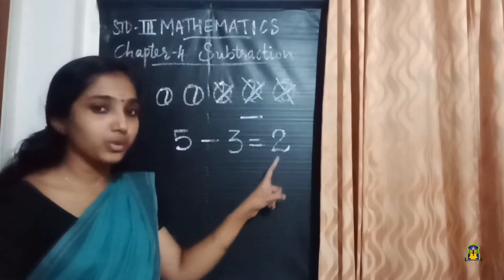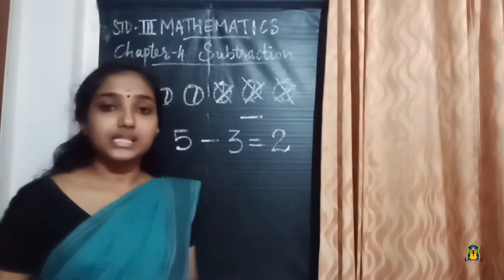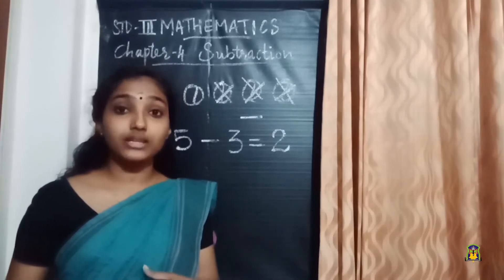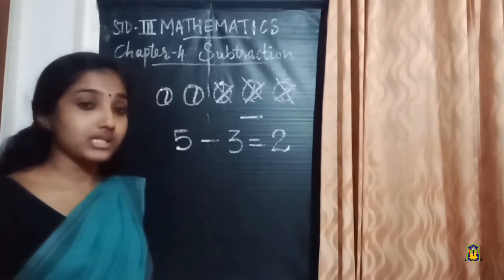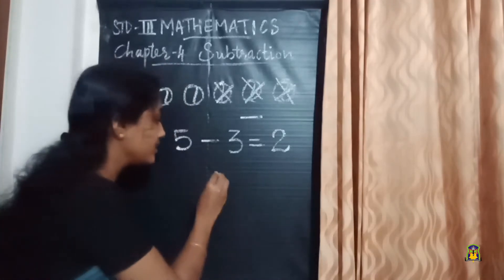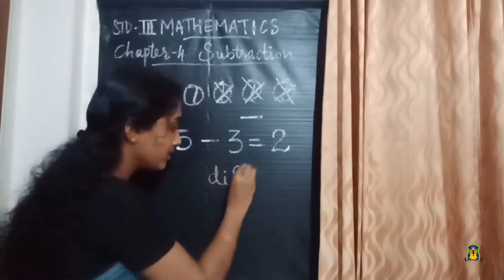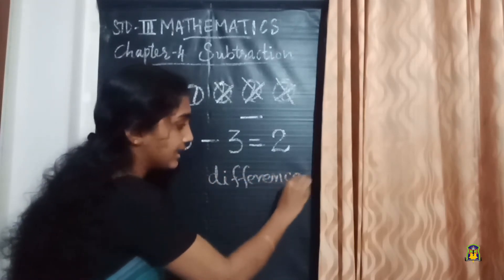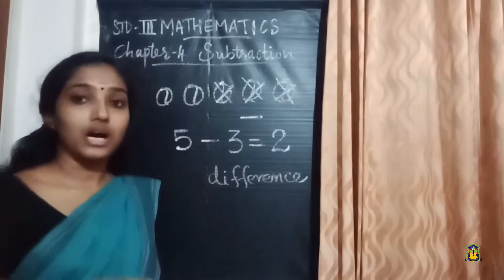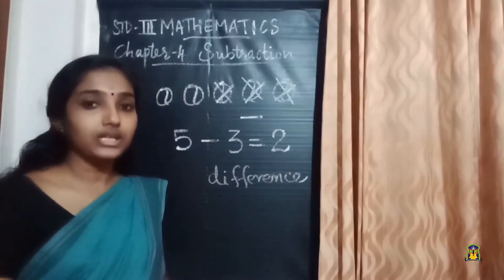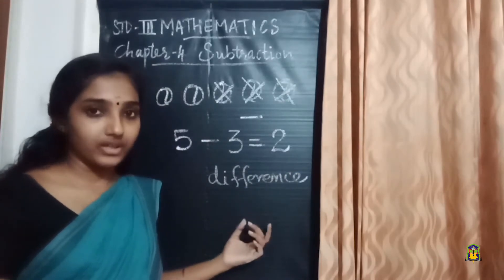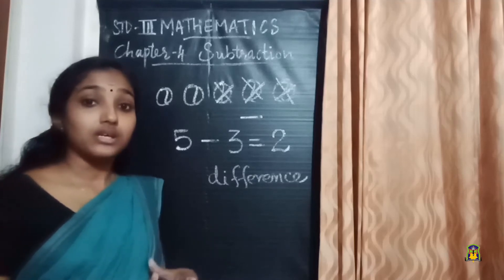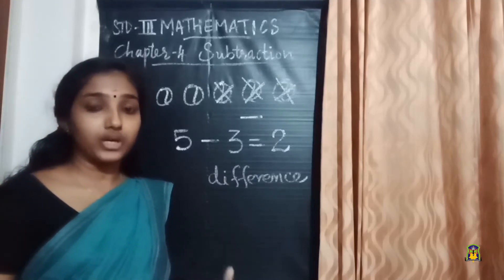So five minus three equals two. The answer that we get after subtraction is called the difference. Subtraction is the process of taking away a number or a quantity from a given number or quantity.